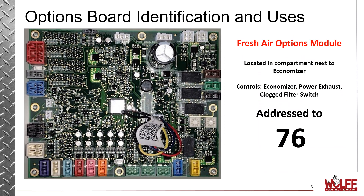This is the fresh air options module. You're going to find this located in the compartment next to the economizer. It controls options like the economizer, the power exhaust, and the clog filter switch. This board needs to be addressed to 76.